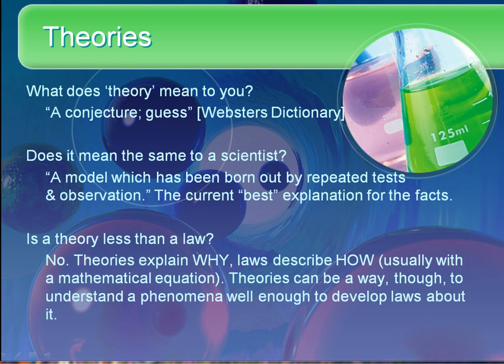To you, the word 'theory' probably means guess — that's the normal English dictionary definition. However, to a scientist, theory is quite different. It's a model which is borne out by repeated tests; it's the current best explanation for the facts. The scientific theory is our best understanding. Theories and laws often confuse people as well. Theories explain why, and laws describe how — so they aren't exactly the same thing. A theory is no less than a law. Theories are a way to understand a phenomenon well enough to develop laws about it.